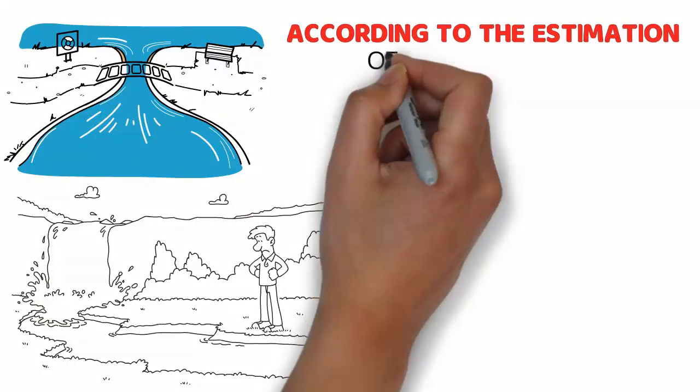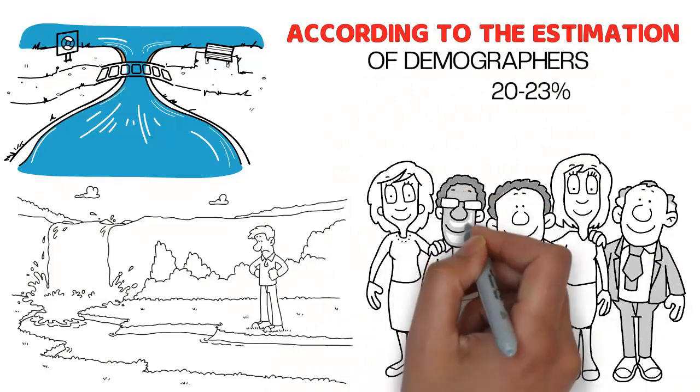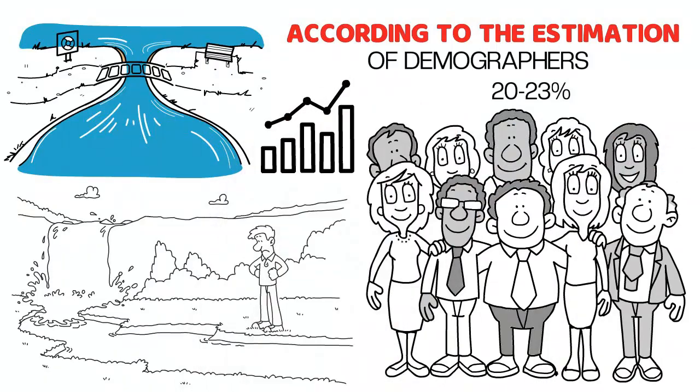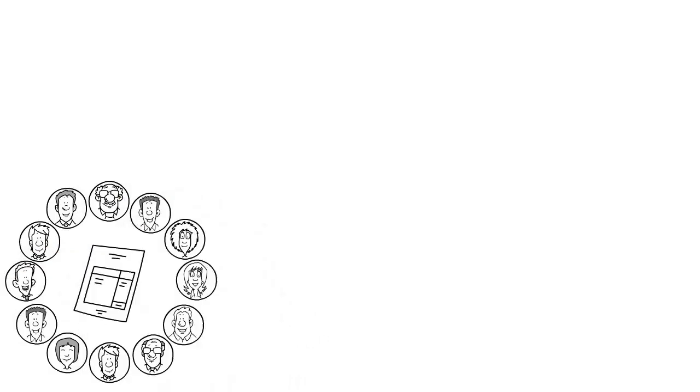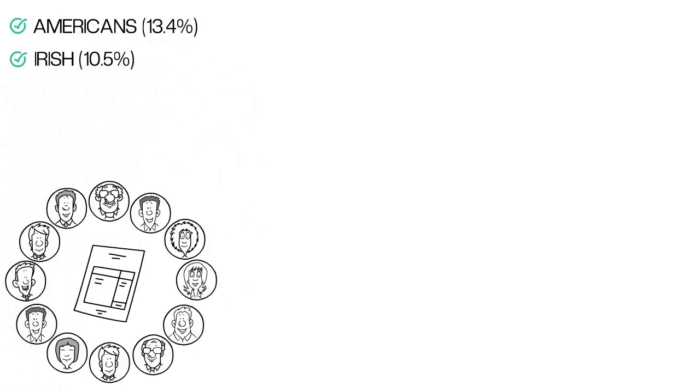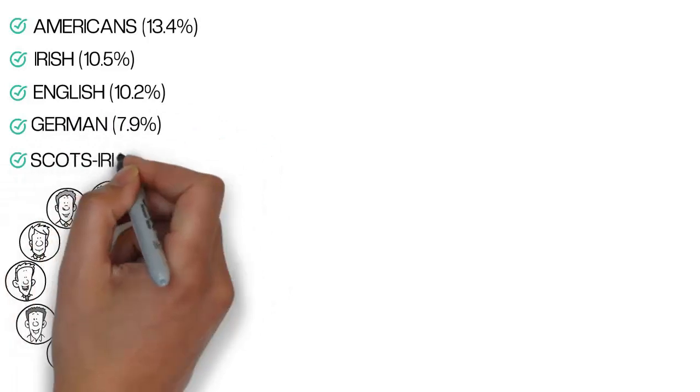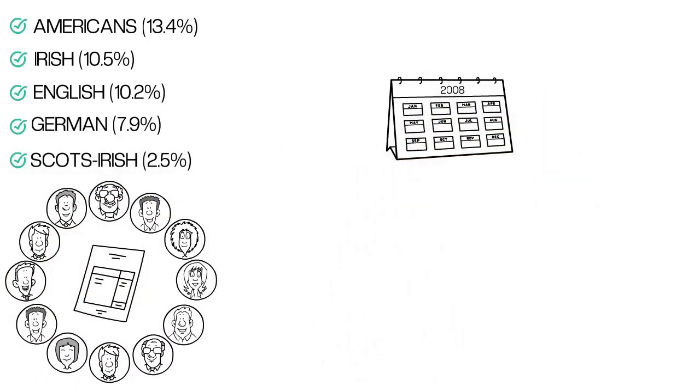According to the estimation of demographers, a minimum of 20-23% of people in Alabama are of predominantly English ancestry, and the figure might be higher than that. The largest reported ancestry groups in Alabama are Americans 13.4%, Irish 10.5%, English 10.2%, German 7.9%, and Scots-Irish 2.5%, according to data from the 2008 Census.